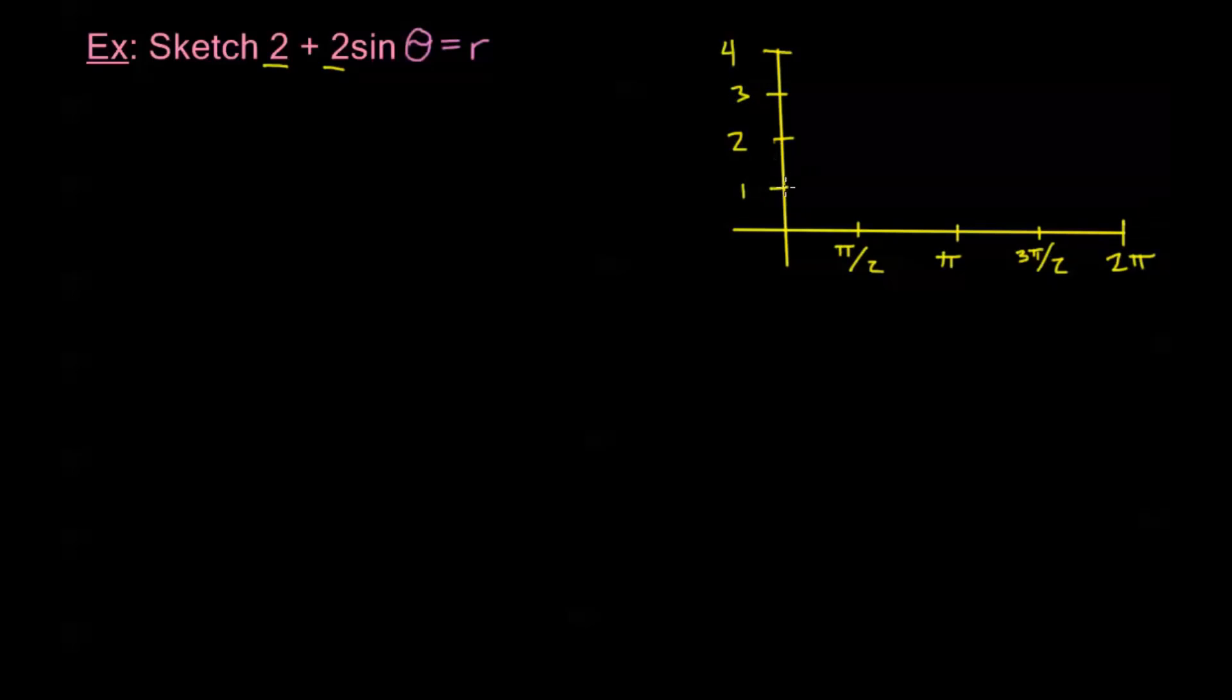And remember on our reference graph my vertical axis is my r, my horizontal axis is my theta. So again we're just taking our equation r equals 2 plus 2 sine theta and for a moment we're going to pretend that it's not in polar coordinates. We're going to pretend that this is actually a rectangular coordinate equation so we can set up a rectangular graph for us to refer to to graph this in polar.